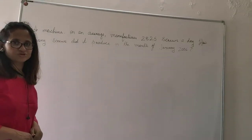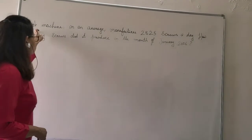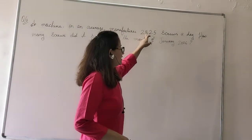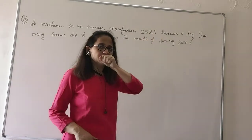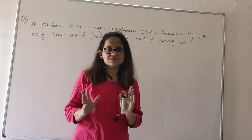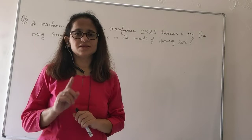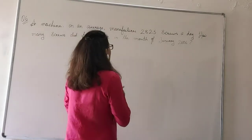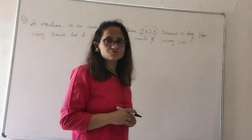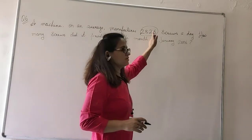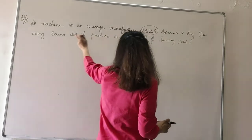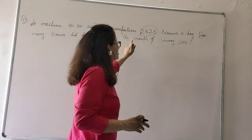Question 6 of exercise 1.2: A machine on an average manufactures 2825 screws in a day. There is a screw manufacturing factory, and in that factory there is a machine that can produce 2825 screws in one day. Now the question is: how many screws did it produce in the month of January 2006?